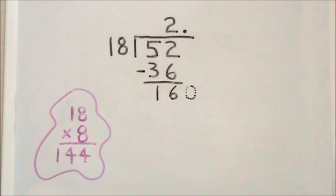which is less than 160. So we subtract 144 from 160. Since we multiplied 18 by 8, we put 8 directly to the right of the decimal point.